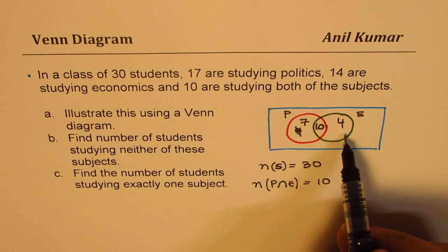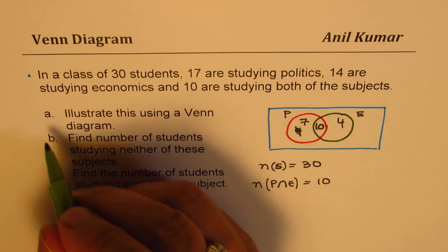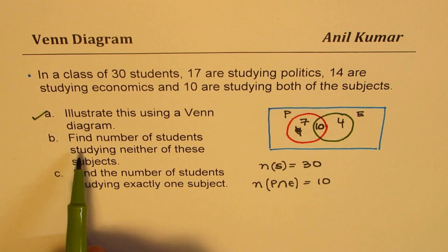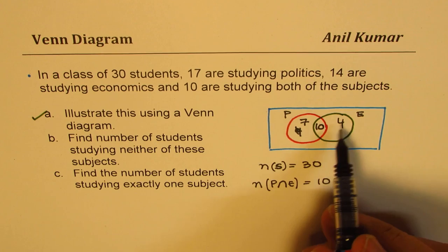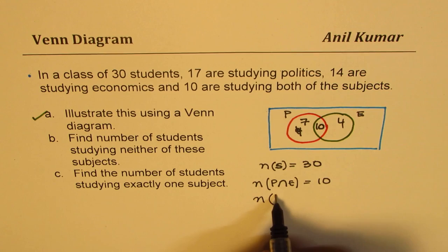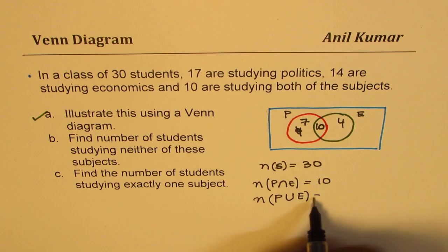Now we can answer all the questions. So first part is done for us. The Venn diagram is right there. So question here is, find the number of students studying neither of these subjects. How do you figure that out? The students who are studying either of these subjects will be how many? Let's add them all. So number of students who are studying politics or economics is basically equal to some of these, which is 7 plus 10 plus 4.